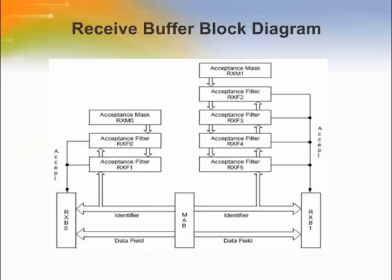The device includes two full receive buffers with multiple acceptance filters for each. There is also a separate message assembly buffer or MAB that acts as a third receive buffer. The MAB is always committed to receiving the next message from the bus and assembles all messages received. The remaining two receive buffers, called RXB0 and RXB1, can receive a complete message from the protocol engine via the MAB. The MCU can access one buffer whilst the other buffer is available for message reception or for holding a previously received message.